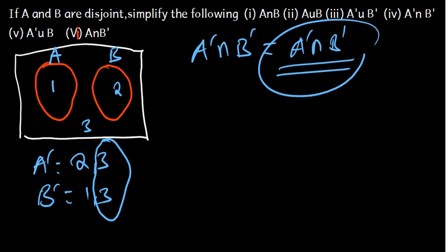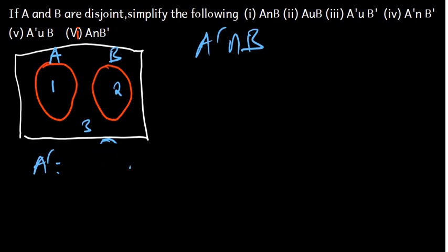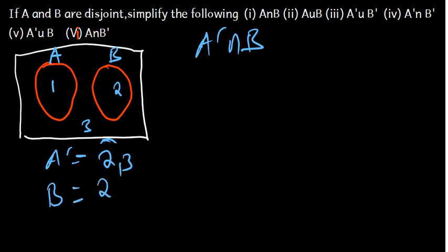Let's also consider A complement intersection B. A complement is {2, 3} and B is {2}. The numbers common to both A complement and B is 2, which is the same as B. So A complement intersection B equals B.